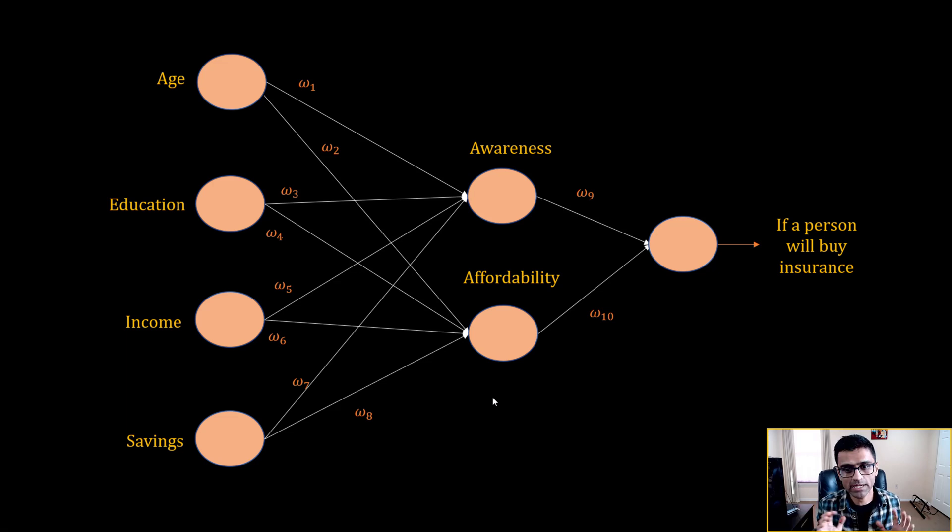Vanishing gradient is a common problem encountered during neural network training. In this video we will look into how this problem affects regular artificial neural networks and RNNs.